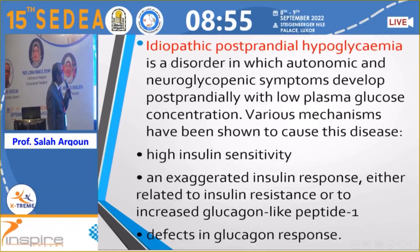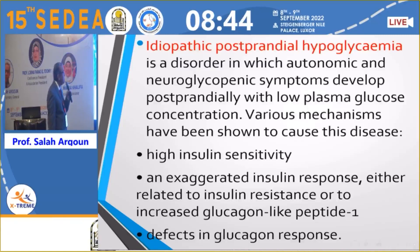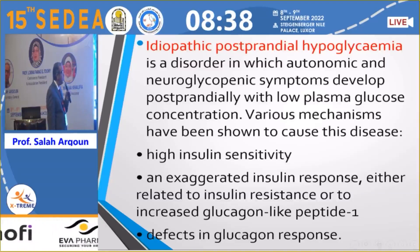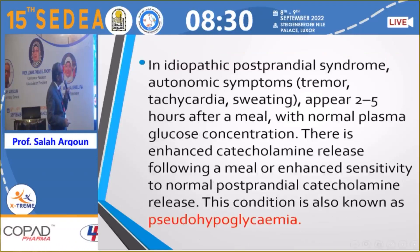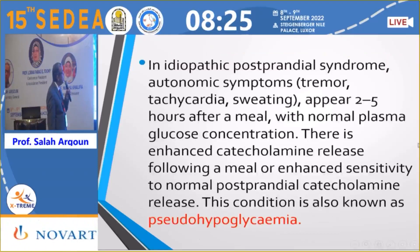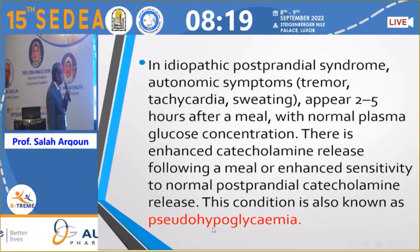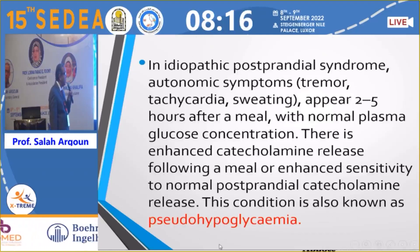Post-prandial hypoglycemia presents with autonomic and neuroglycopenic symptoms with low plasma glucose concentration. The mechanism involves high insulin sensitivity, exaggerated insulin response related to insulin resistance, increased glucagon-like peptide-1 (GLP-1), or a defect in glucagon response. There is also a post-prandial syndrome presenting with autonomic symptoms — tremors and tachycardia — occurring 2 to 5 hours after a meal, but with normal plasma glucose concentration; this is called pseudo-hypoglycemia.